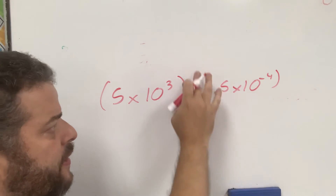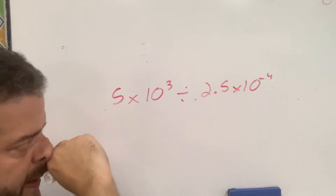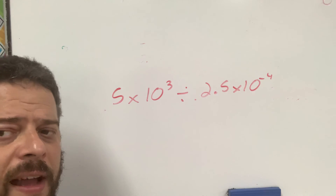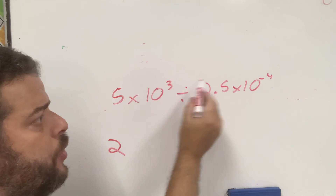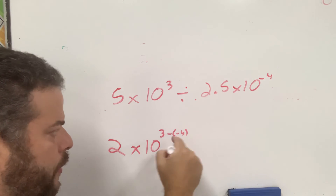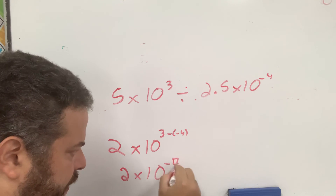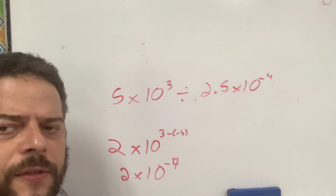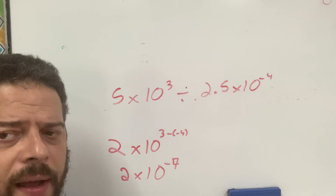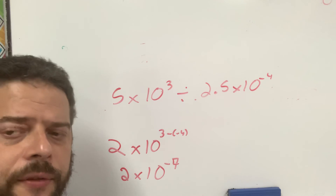If this were a division, it's the exact same thing — we apply the exact same rules. You divide the numbers: 5 divided by 2.5 is 2. And then you subtract the exponents: 3 minus negative 4 turns into positive 7, so you end up with 2 times 10 to the 7. This is how to do these operations in math. I will post a link to a video to show you guys how to do the operations in your calculators. Take care.